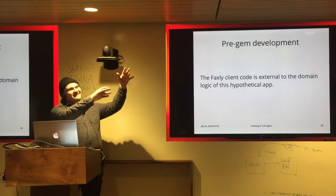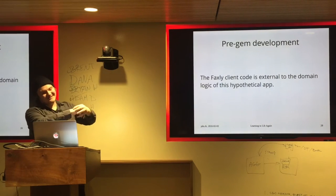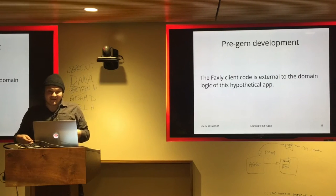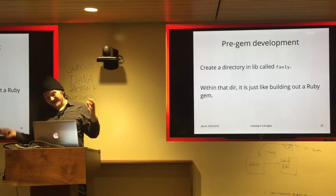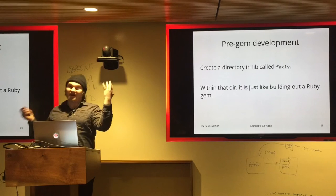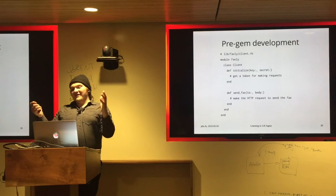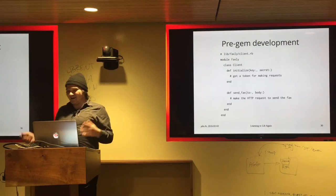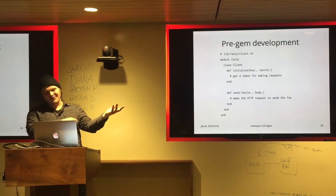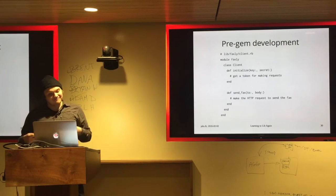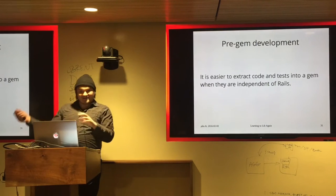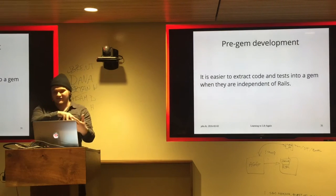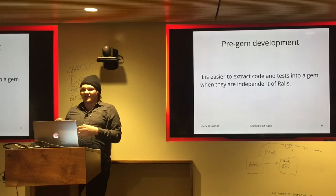That code is external to your app. Within the app directory, what Faxly does is tangential to your application — so don't put it in app, put it in lib. You create a directory called faxly in your lib folder, just like building up a Ruby gem. You'd create your client at lib/faxly/client, define your namespace corresponding to the file structure, then create your class. It mirrors that interface with a send_fax method and credentials.